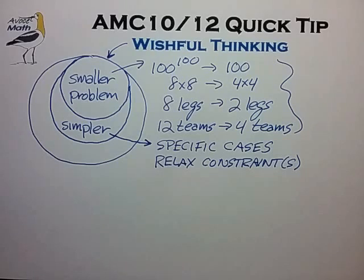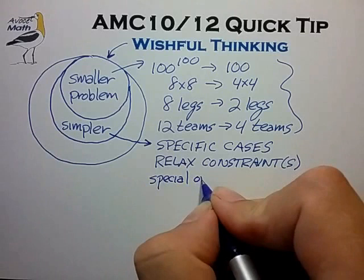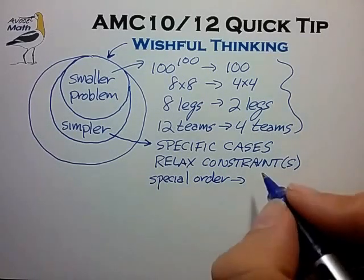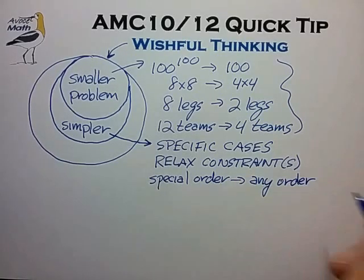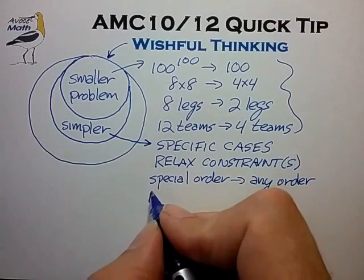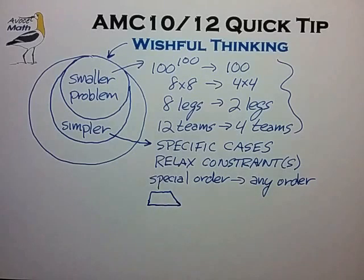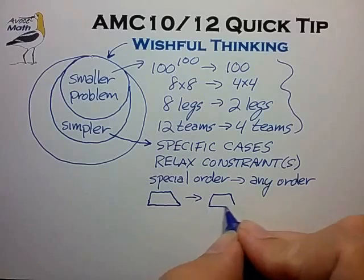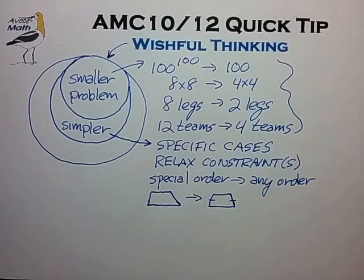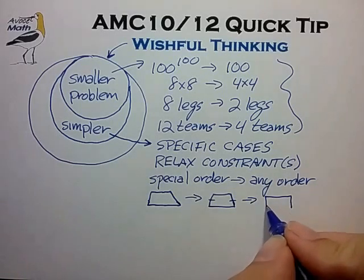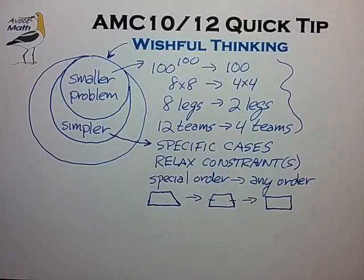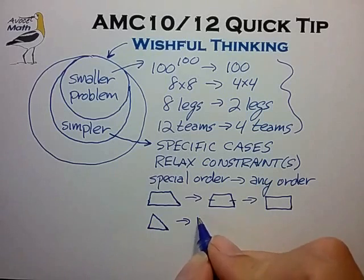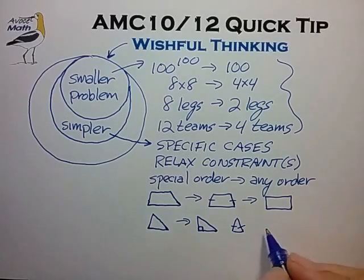As examples of these two techniques: if you had a problem involving counting in a special order, it might be helpful to try counting with any order. In geometry, sometimes we're asked to deal with an arbitrary trapezoid, and it's often helpful to examine the problem in the case of an isosceles trapezoid. In some rare cases you can substitute a rectangle instead of an arbitrary trapezoid. In the case of an arbitrary triangle, you may want to examine the same problem in the specific case of a right triangle, an isosceles triangle, or better yet, an equilateral triangle.